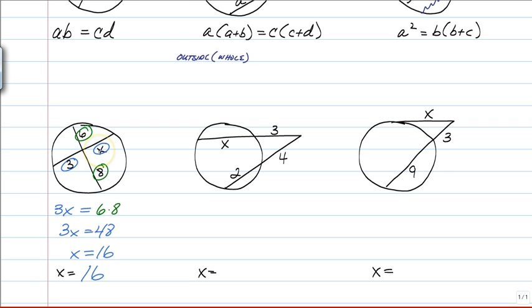So, this piece has to be 16. And if you want, you can always check when you're done. So, you could just do 6 times 8 is equal to 3 times 16. 48 is equal to 48. Hooray, I win. Game over. You're done.